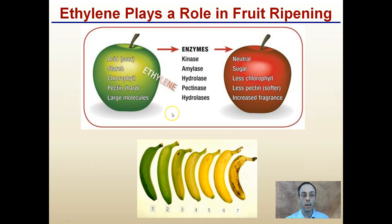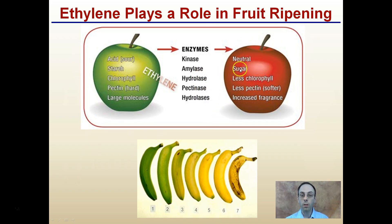When we add ethylene, it can activate a bunch of enzymes — notice all these end in '-ase', indicating that they're enzymes — and we can develop a ripe apple, which is neutral in pH, has a lot of sugar instead of starch, less chlorophyll, less pectin, so it's softer and has increased fragrance.